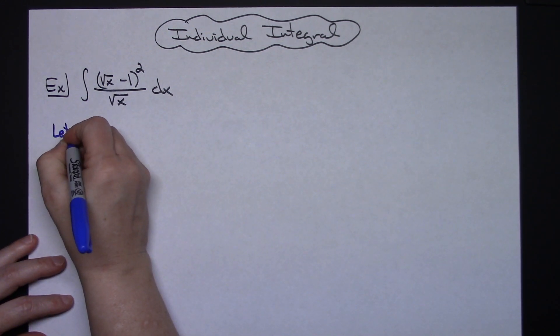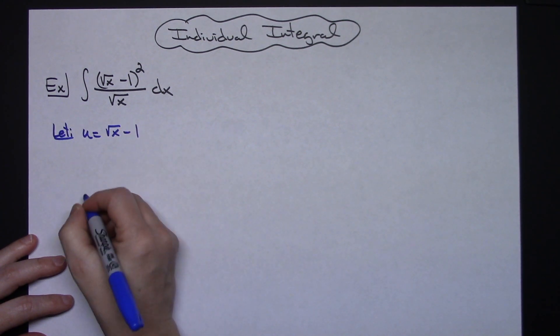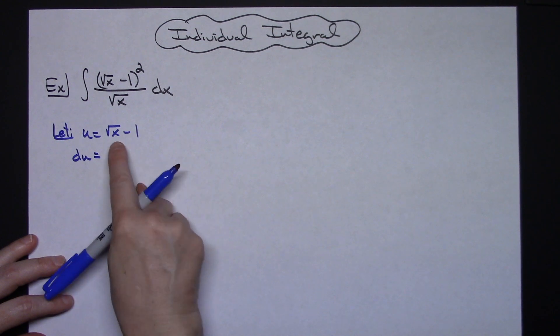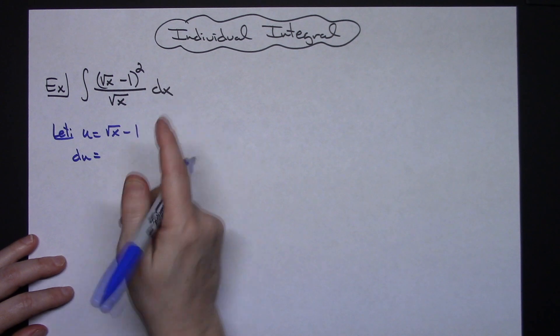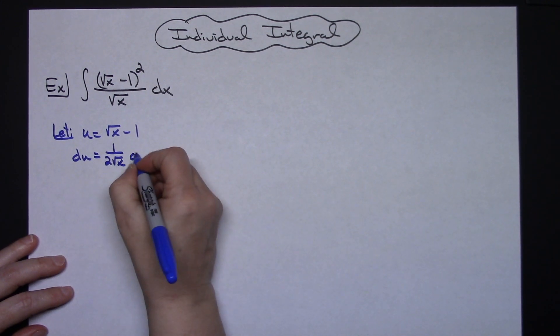We're going to let our u be that square root of x minus 1. Then I'm going to take the derivative of both sides. du is equal to, thinking or picturing this as an x to the 1 half and then taking the derivative of that, we're going to get a 1 over 2 square root of x dx.